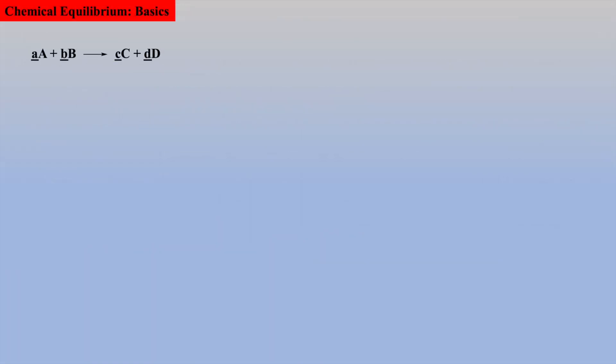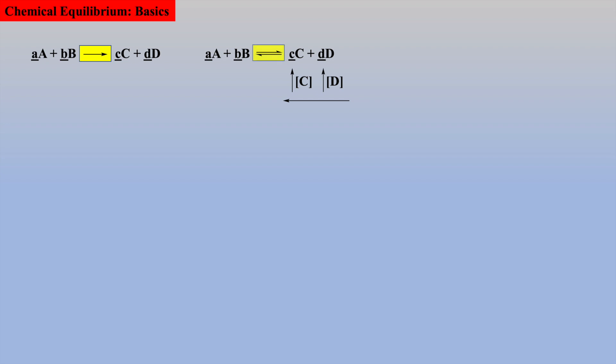Many chemical reactions are irreversible. Thus, a forward arrow is used to represent reactants going to products. However, many reactions exist as equilibriums — that is to say that once products accumulate, they may go back to reactants, which requires an equilibrium arrow.